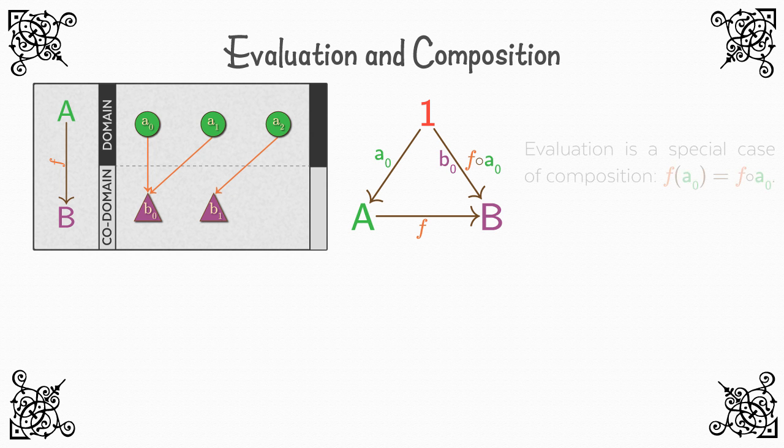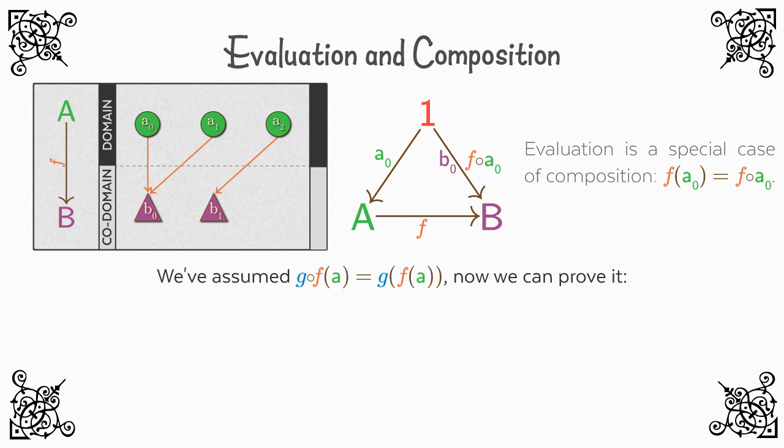This shows us that evaluation is a special case of composition. In other words, f of a₀ is equal to f following a₀. We have been using this idea since we defined composition. We said that g following f of a is equal to g of f of a. Now we can prove it.